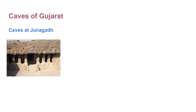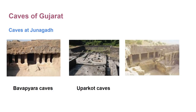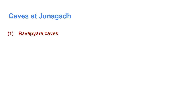The first one is the group of Baba Piara caves. The second one is Upparkot caves. And the third one is Khabrakeria caves. The Baba Piara caves are situated near Baba Piara mud.